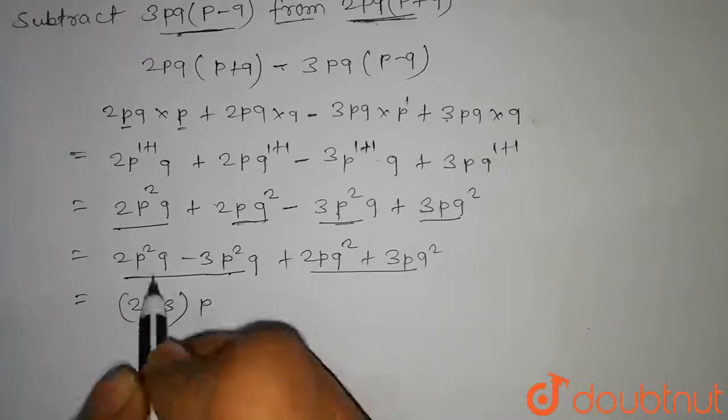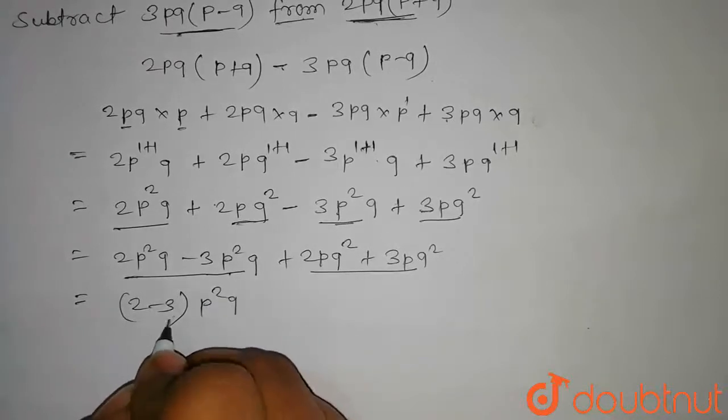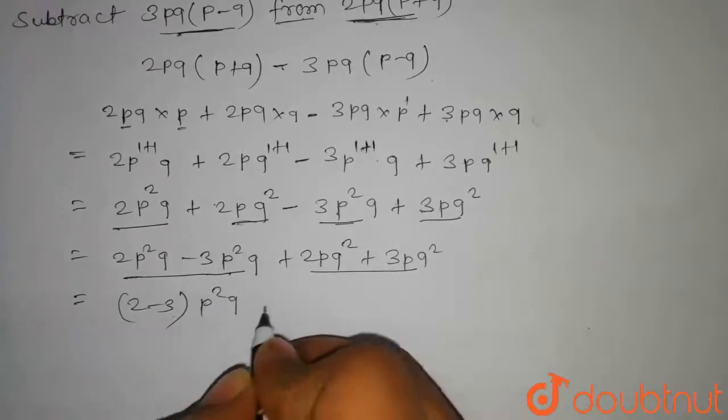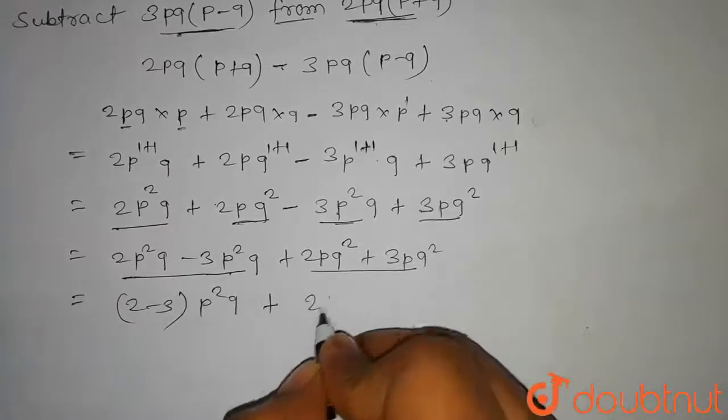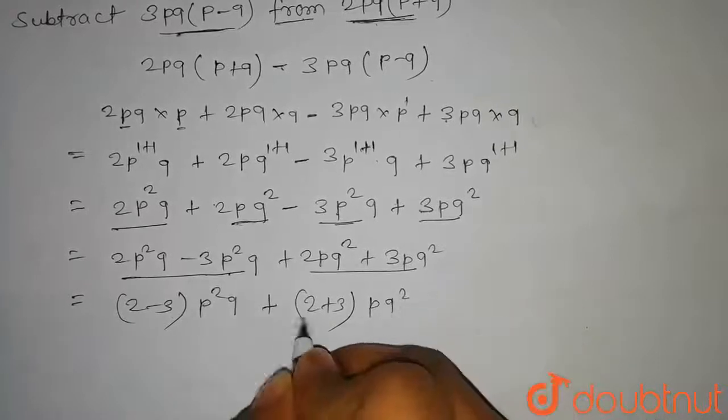On taking p square into q common we get 2 minus 3 into p square into q plus, and on this if you take pq square common then we get 2 plus 3.